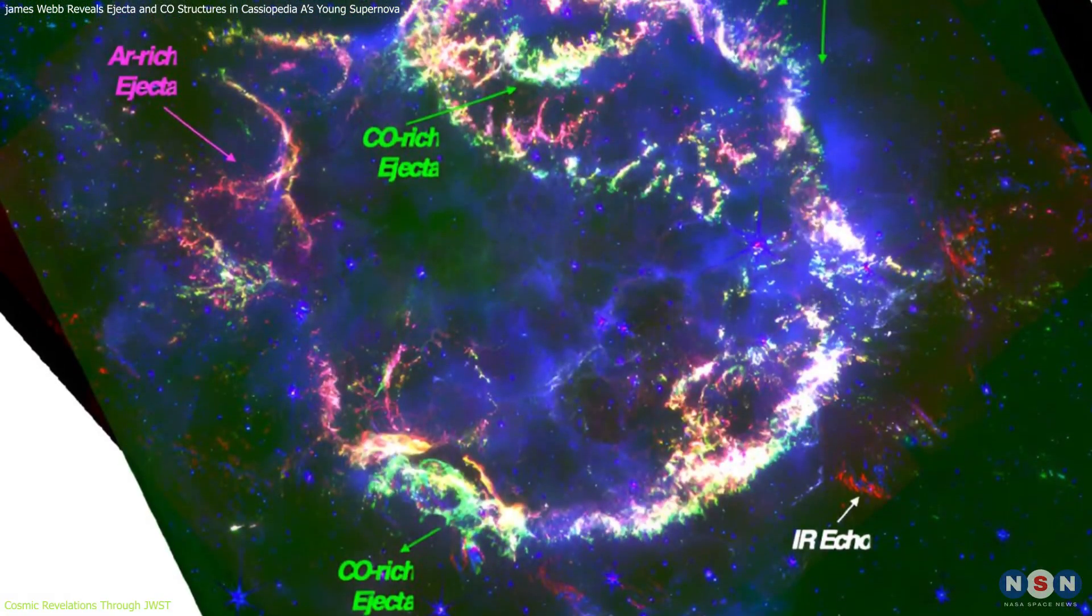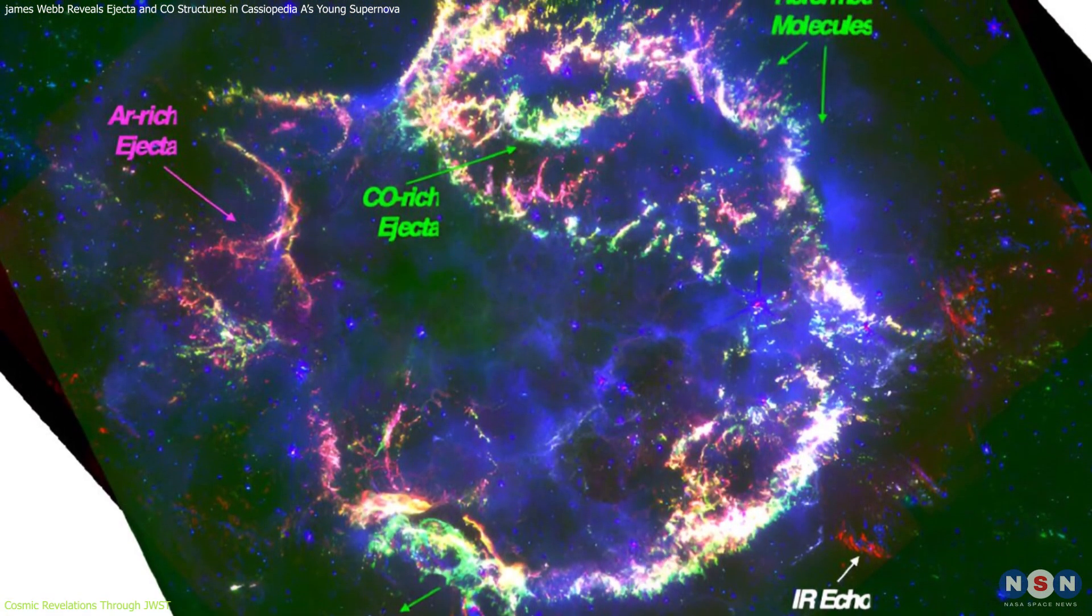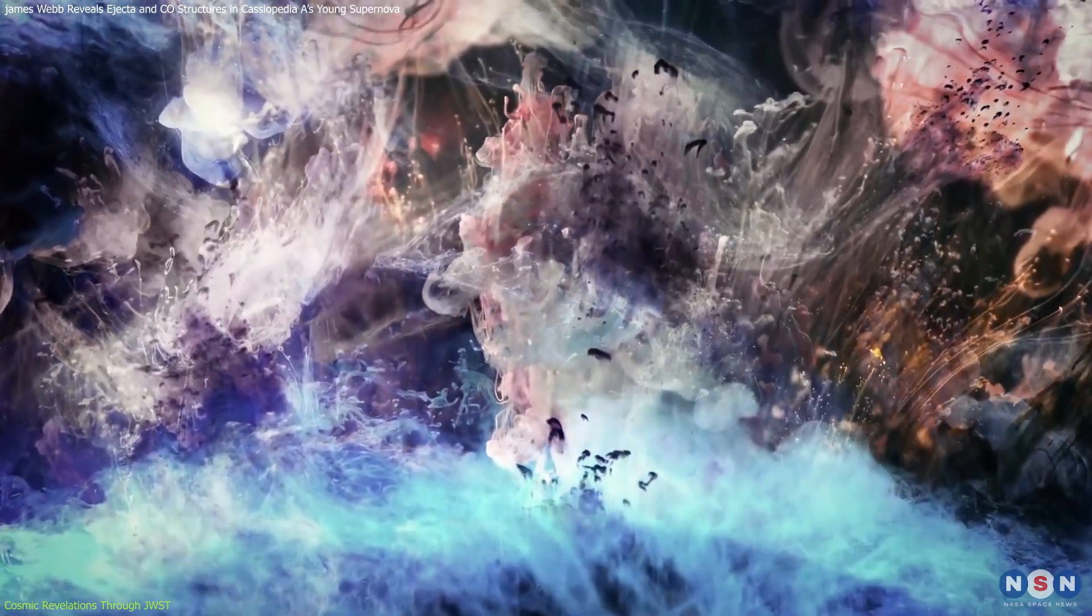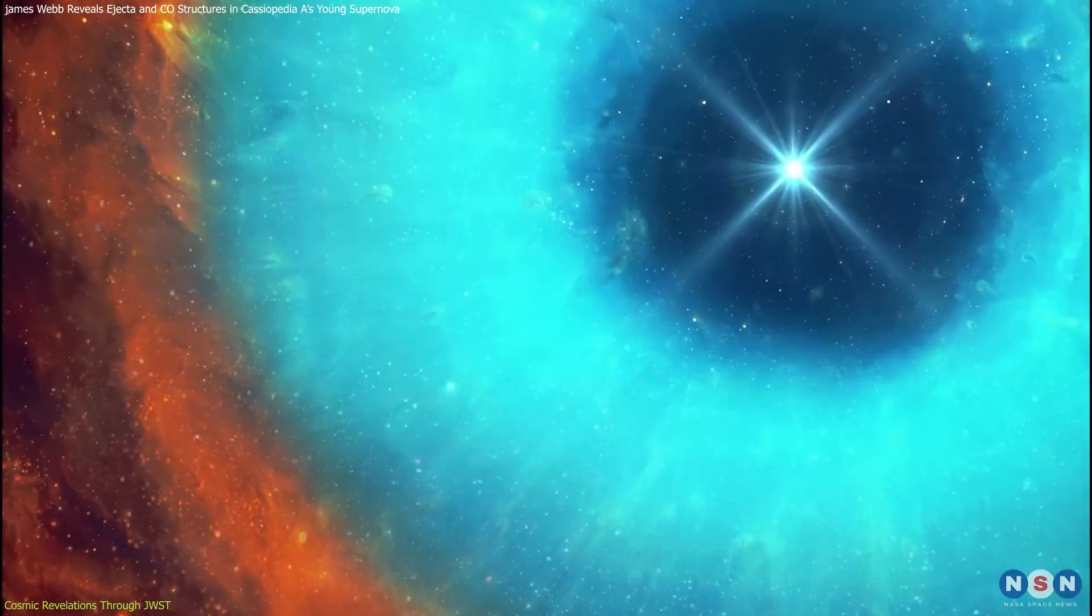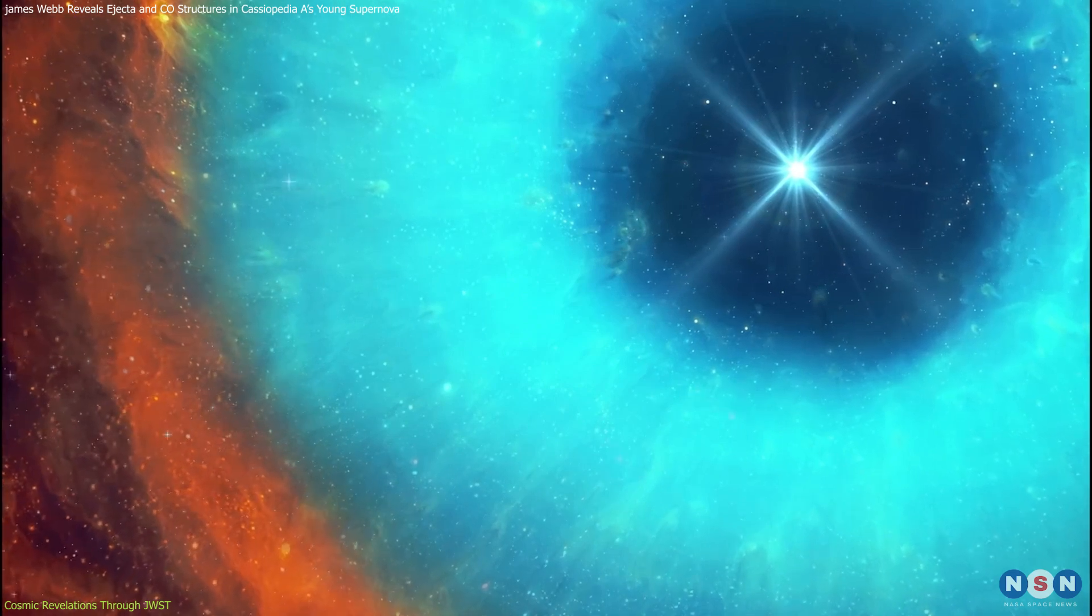The persistence and reforming of carbon monoxide are key to understanding how cooling occurs in the aftermath of a supernova, as it allows for the condensation and eventual formation of dust particles.